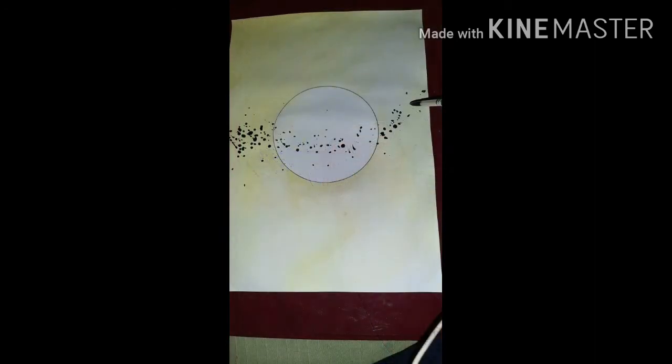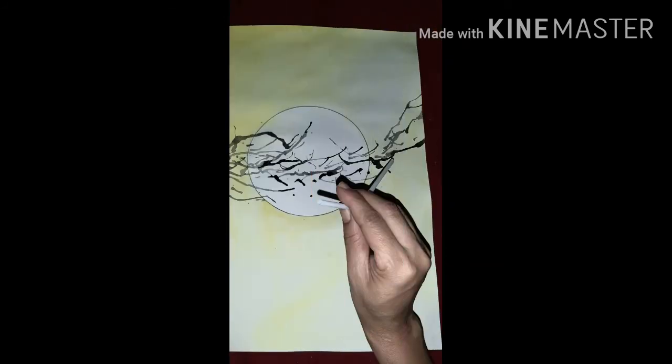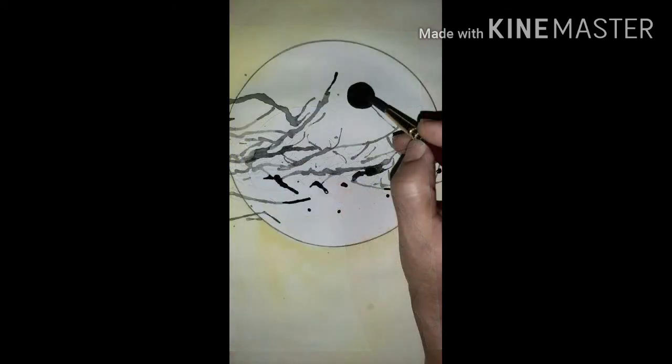Blow it with the straw towards the right direction. It takes a shape of the branch of a tree. When the branches dry, make a small circle along with a little big circle for the head and the body of a bird.